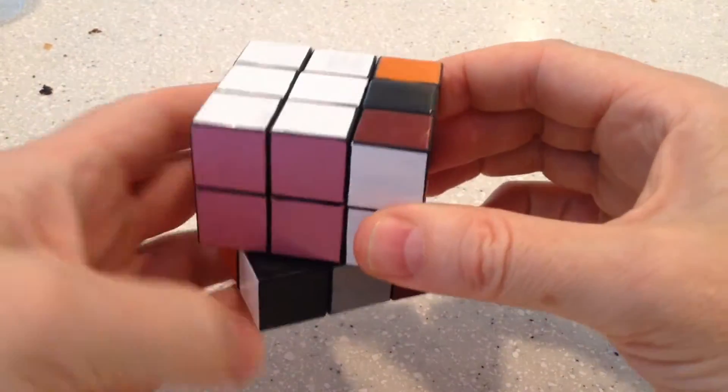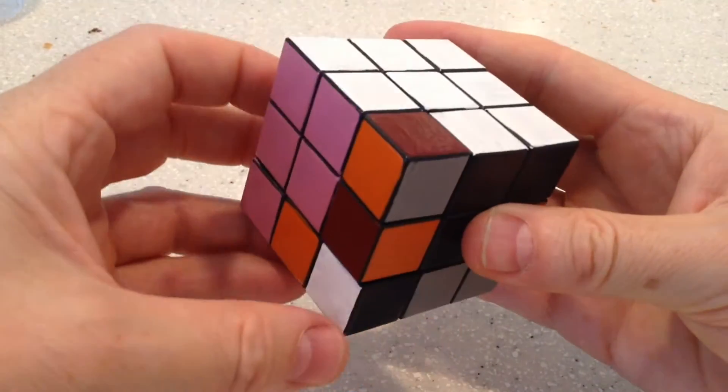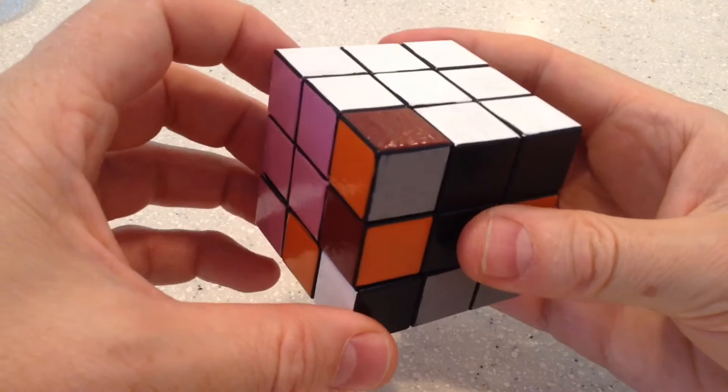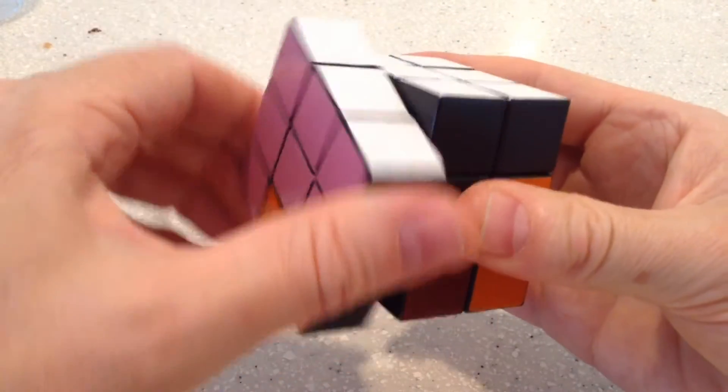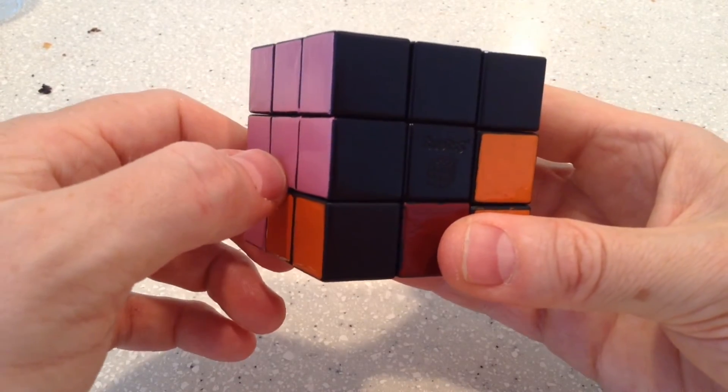And then we take that white out of place, return it to below its position, and then we insert it again. And there that edge piece is in place.